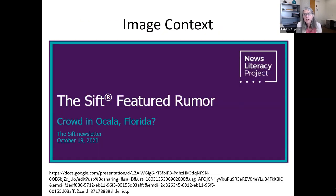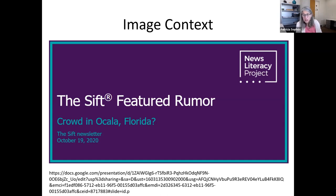Now we're going to talk about images. Even if an image is not manipulated, it can be presented with a false context or incorrect caption, which makes it misleading. We need to determine if a caption accurately describes an image. Because images with false context are easy to share on social media, they are a common source of misinformation. Here's an easy example of deconstructing an image-based rumor from the SIFT, a newsletter from the News Literacy Project.